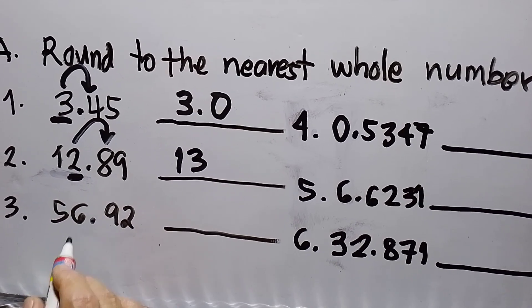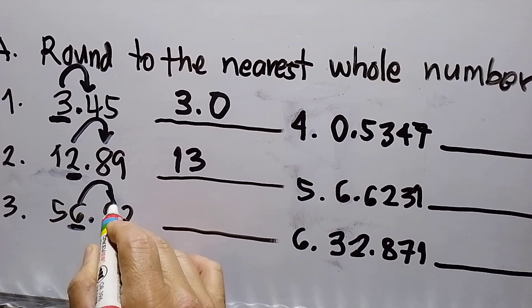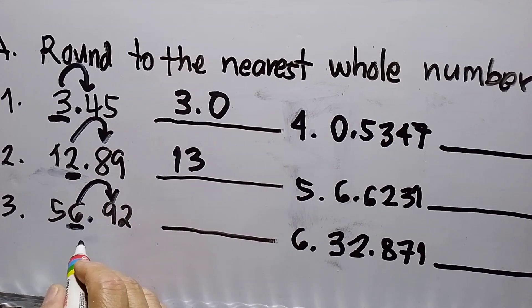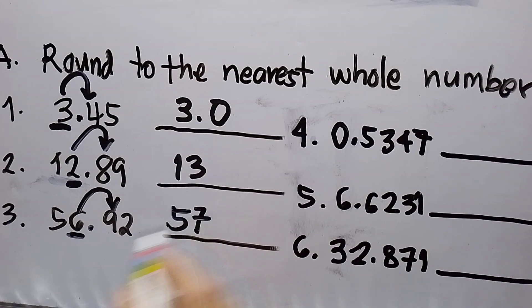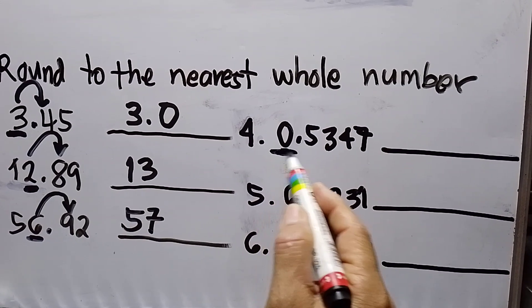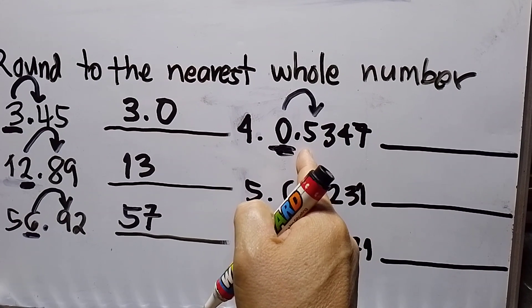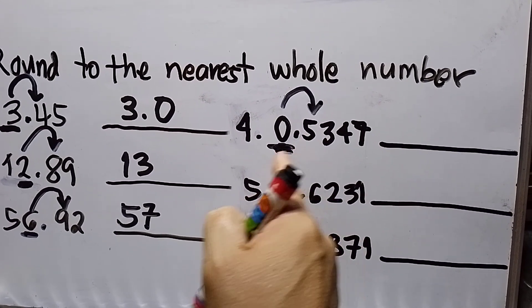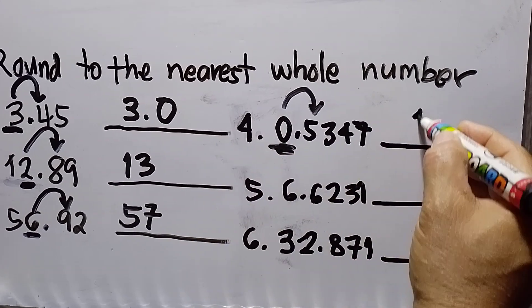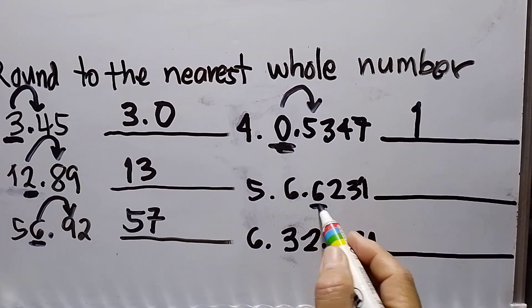Number three is 56.92. I underline the ones place and put an arrow to the right. Since 9 is more than five, I add one to 6, so this becomes 57. Number four has a zero in the ones place. I underline it and put an arrow. Since the digit to the right is five — and if five or more, we add one — zero plus one equals one.